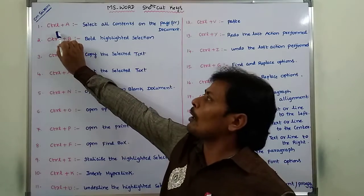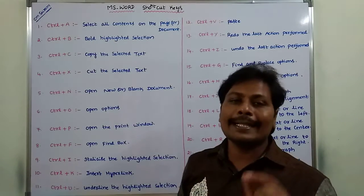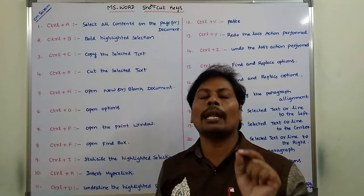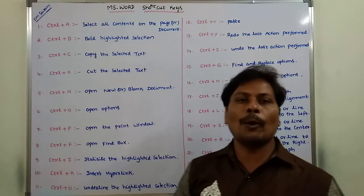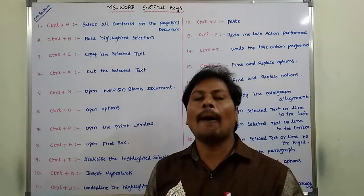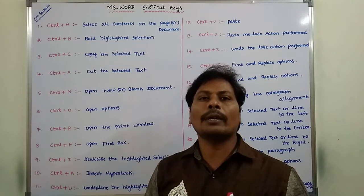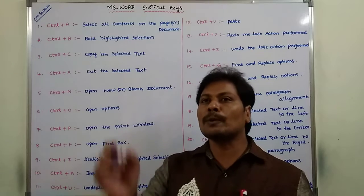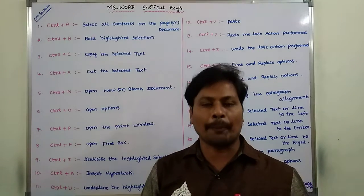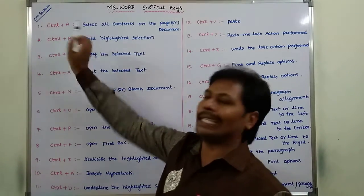The first one is Ctrl plus A. It is used for selecting all the contents in a particular page or document. Suppose we are opening a particular document and typing some information — if we want to select all the information in a particular page, we use the key Ctrl plus A.